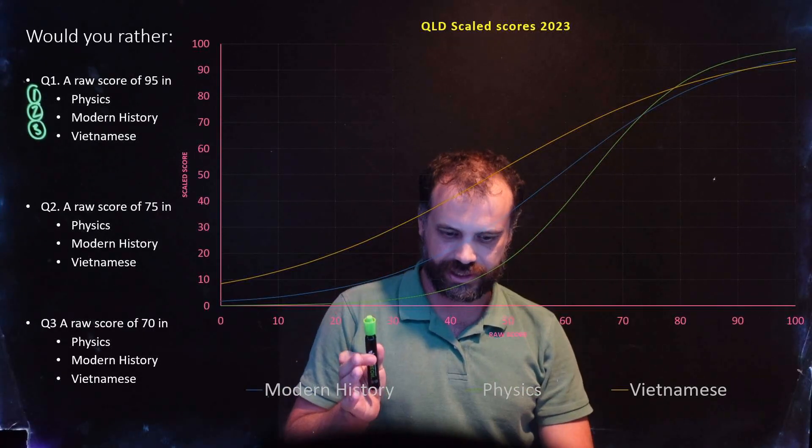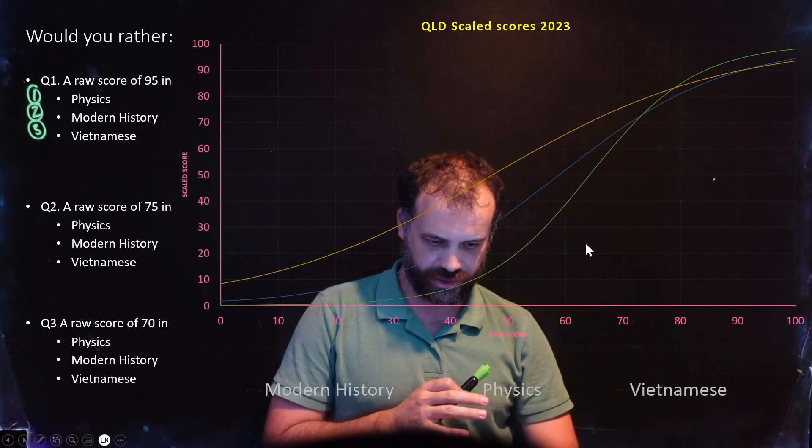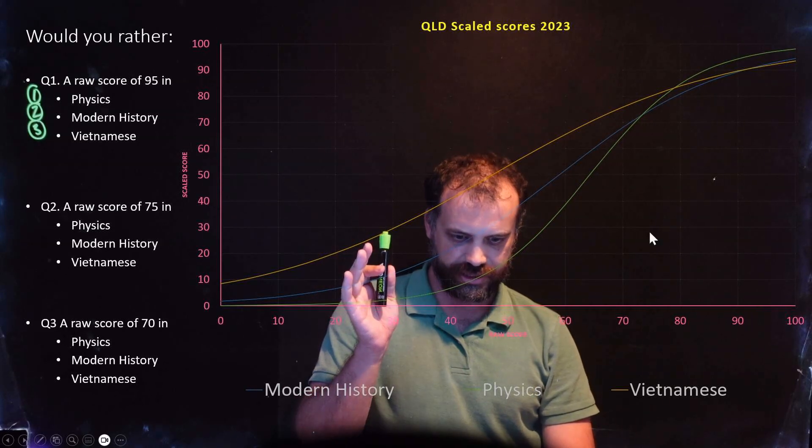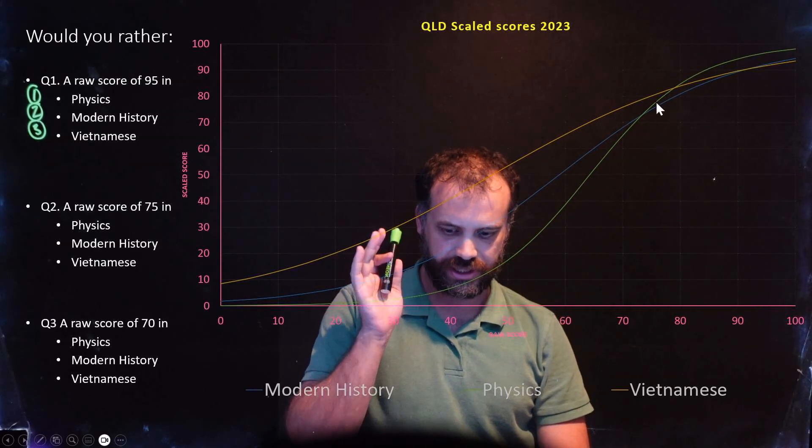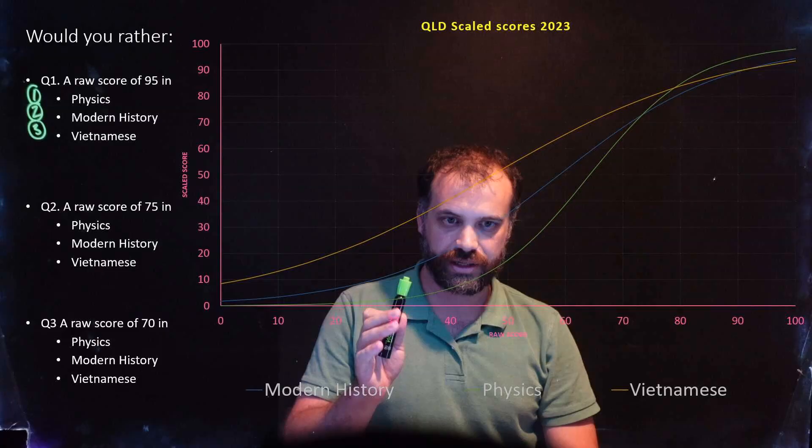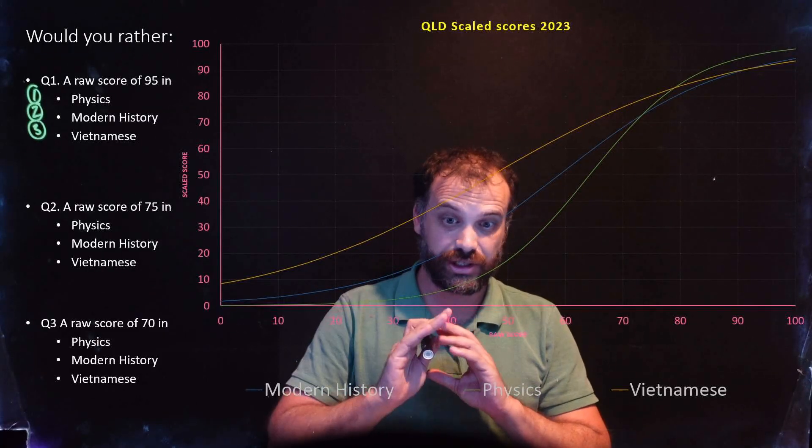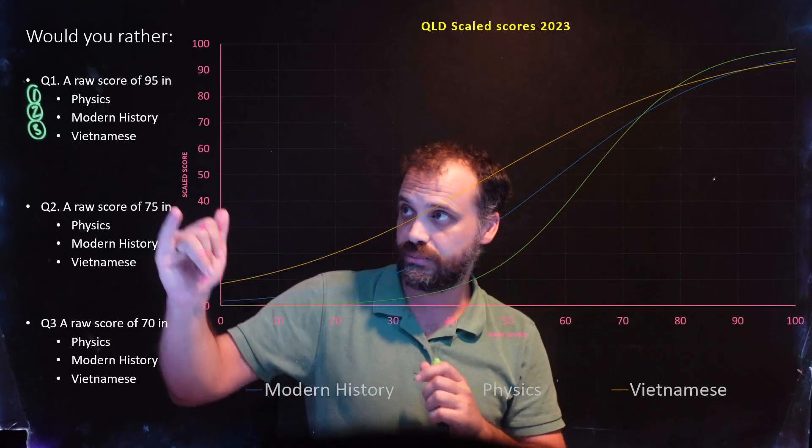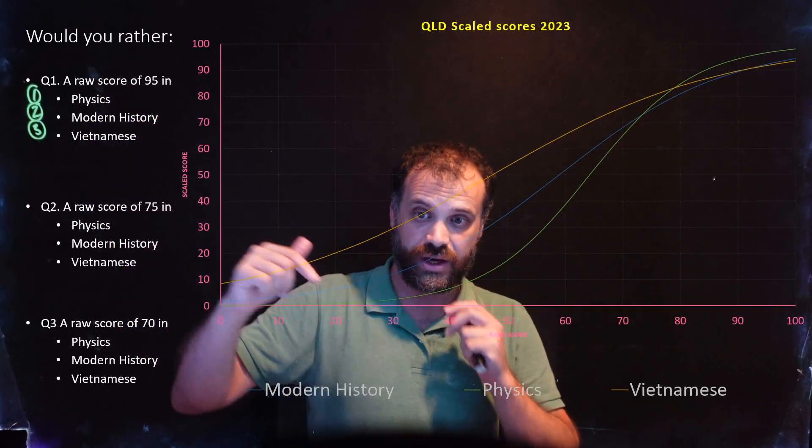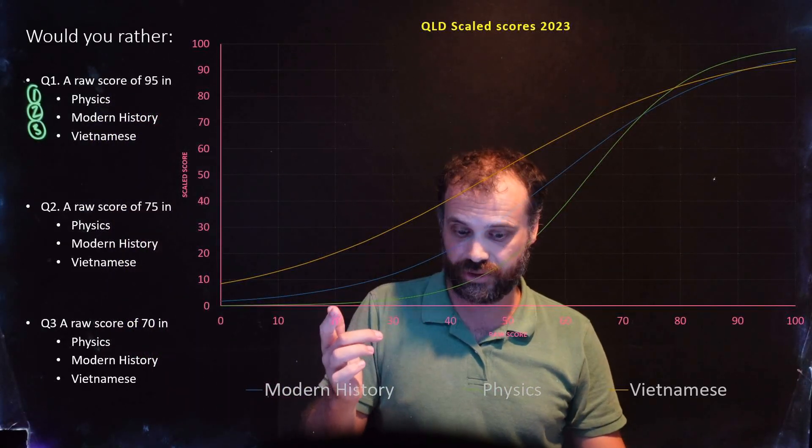What happens once we get into the 75s? There's 75. We come up into here. All of a sudden, Vietnamese takes the clear lead. Vietnamese has jumped from third when we were at 95s up to first when we were at 75s. Now, physics is still above modern history. So physics is in second place, and modern history has dropped to third place.